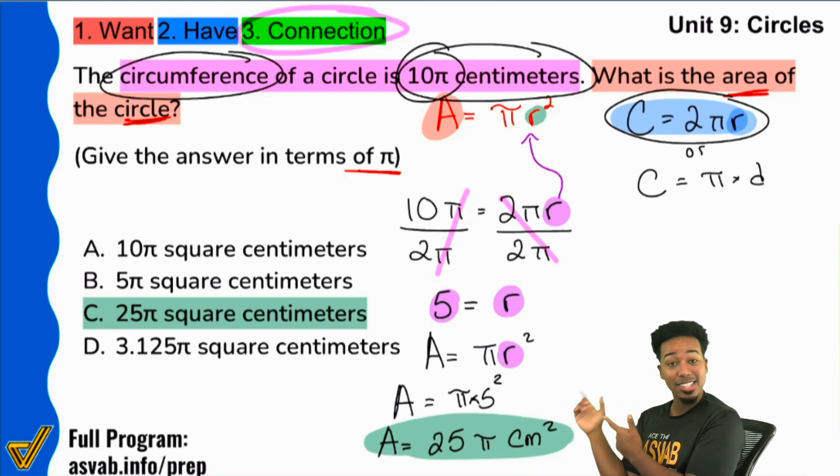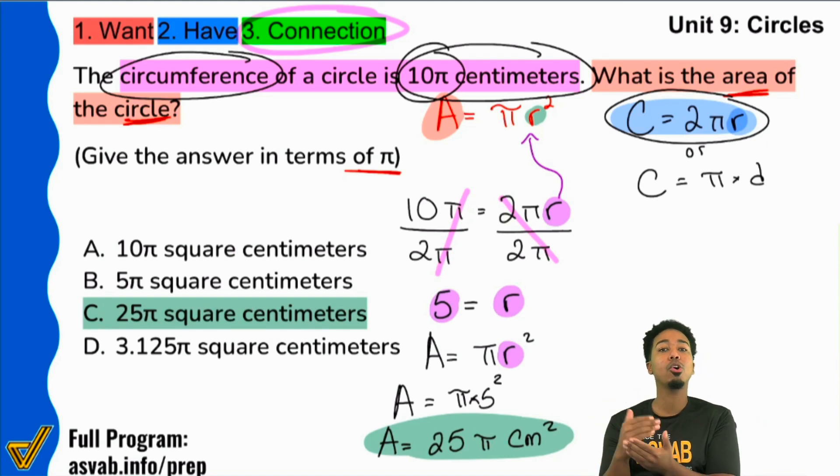So if you have any questions at all about this, my party people, if you're in the program, get into the circles unit, unit 9 in the arithmetic reasoning bootcamp, and go in there and practice, practice, practice. Watch videos for the lessons if you need to, but ultimately your goal is to pass the unit checkpoint. Earn your stars. That way you can be ASVAB ready at the end of the day.